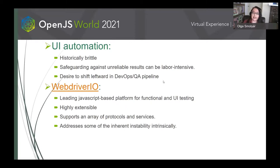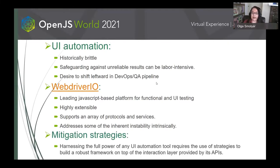WebDriver.io has emerged as the leading JavaScript-based platform for functional and UI testing. WebDriver.io is highly extensible and supports an array of protocols and services. It also addresses some of the instability inherent to UI automation intrinsically, via built-in strategies such as its automatic wait, locator wait strategy, and other techniques. However, harnessing the full power of any UI automation tool requires the use of additional strategies to build a framework on top of the interaction layer provided by its APIs. We're going to talk about this in the context of the UI automation framework we use at InterSystems.